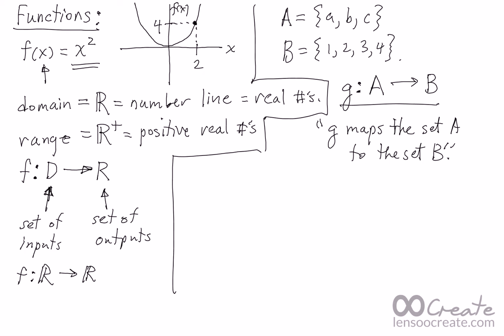Okay, so one way to define a mapping, a function G, is to define how it operates on every single element in the domain, the set A in this case.